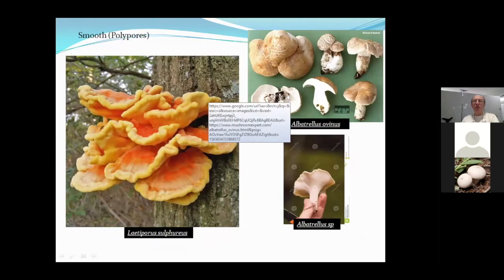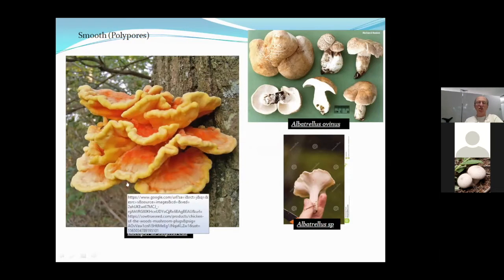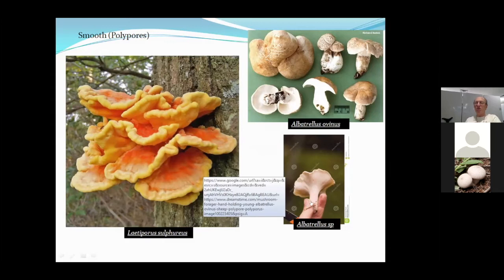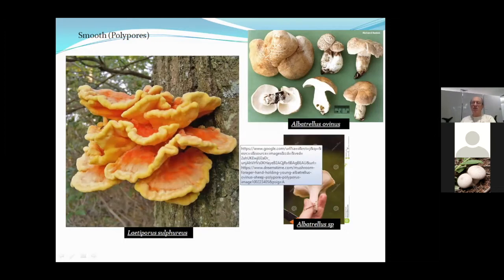A group easily confused with boletes are the polypores — 'polypore' means many pores. In polypores, it's more like one solid surface with many tiny holes drilled in it, lined with spore-bearing cells. Common examples include chicken of the woods, Laetiporus sulphureus, and stalked species like Albatrellus ovinus, the sheep mushroom — a very good edible and common in this area.